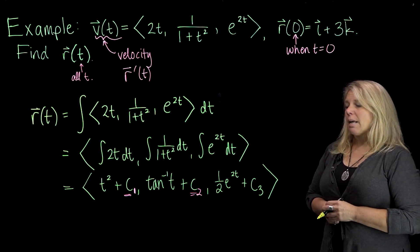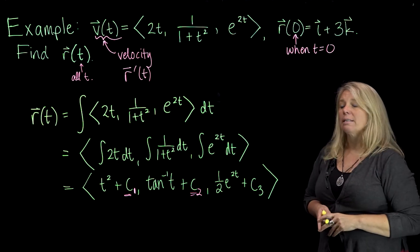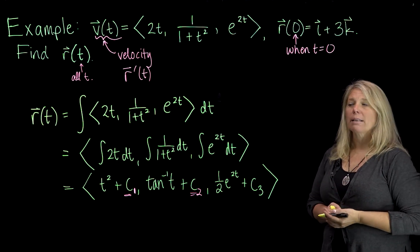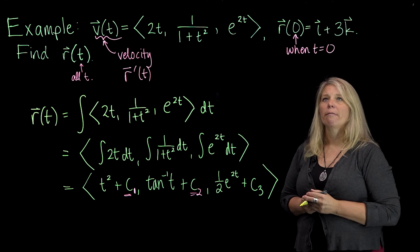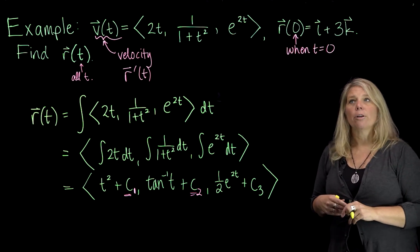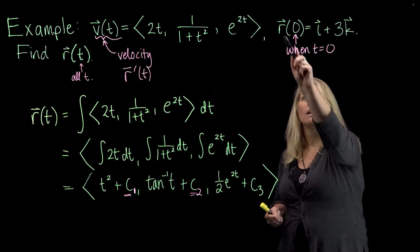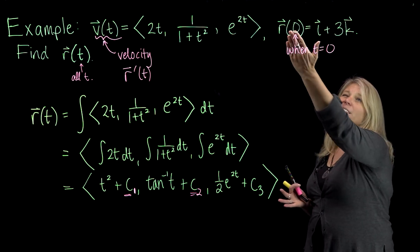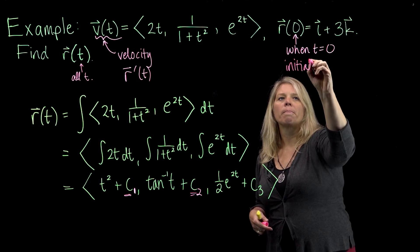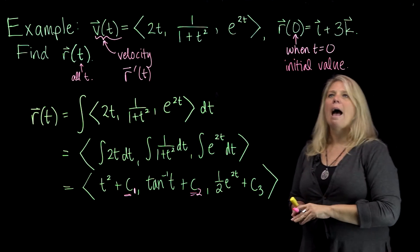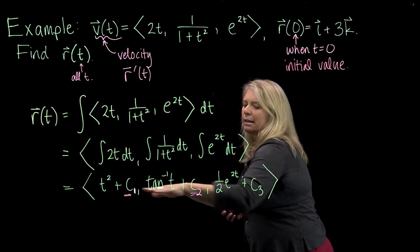The other piece of information in this problem is the position vector at a specific t value. You might remember doing problems like this from Calculus 1, where you're given a value to use to find the c's. This is called an initial value — when you have a specific value of the function, often given at input 0, though it doesn't have to be.